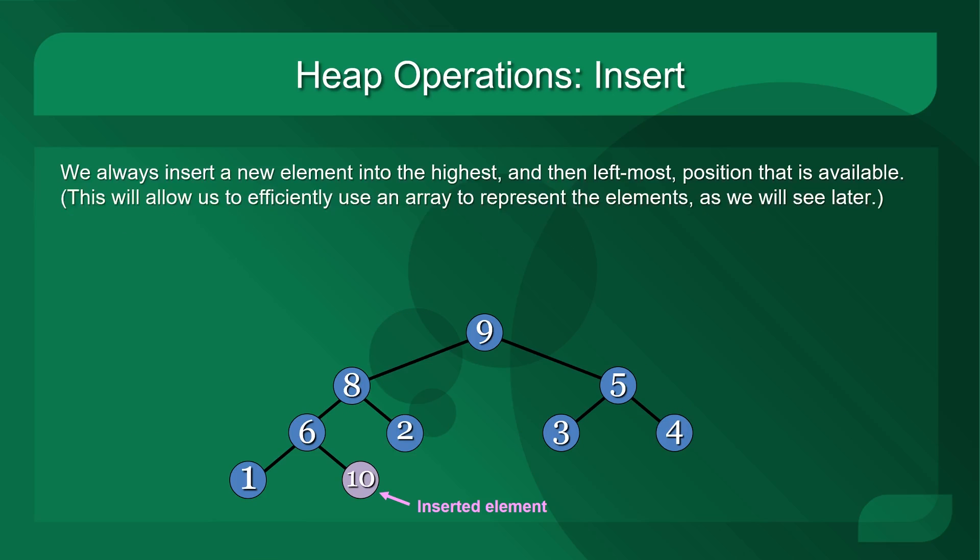Let's look at the insert operation. We will always insert a new element into the highest and then left-most position that is available in the heap. This allows us to efficiently use an array to represent these elements. For example, we've inserted element 10 into the highest position available. It can't be on the first, second, or third level because in this binary heap those positions are all full. But on the fourth level, there is a position available as the right-most child of 6. We'll pick the left-most position available at that level, so we insert 10 as the right child of 6.